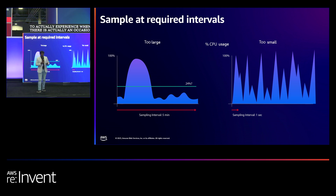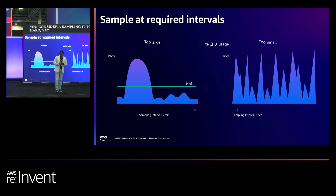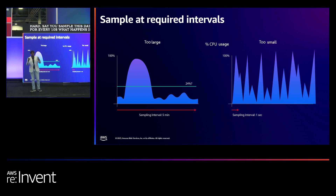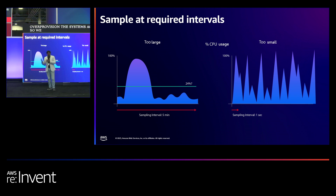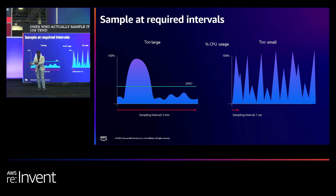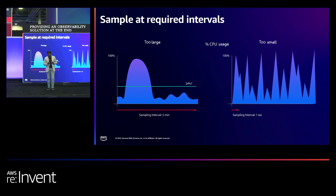Similarly, when you sample too frequently — say every 10 seconds — you have a lot of CPU spikes and tend to over-provision systems. We have seen customers on both ends. Those sampling at 10-second intervals store a lot of data and over-provision for their observability solution. Even if you are planning to store the data in a SaaS-based solution, you tend to overpay for it as well.